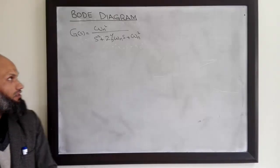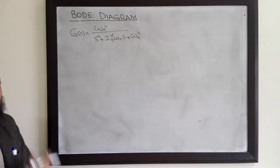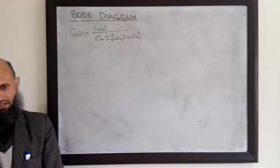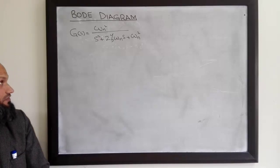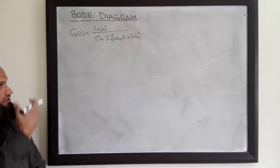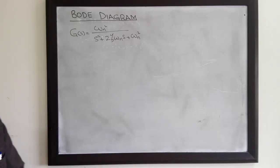Assalamualaikum. In the last lecture we talked about Bode diagram for simple transfer functions, that is the first order transfer function. In today's lecture we shall talk about Bode diagram for a quadratic factor.